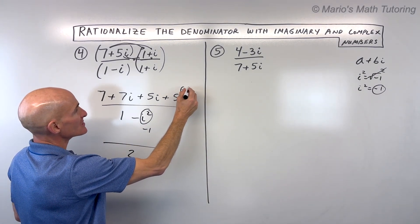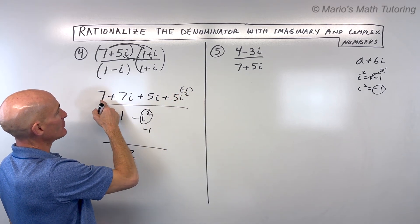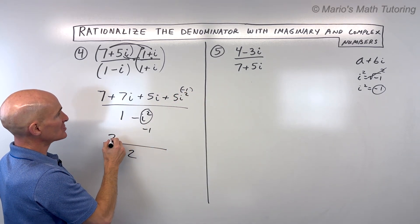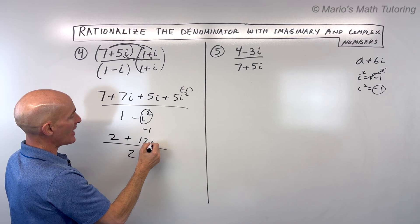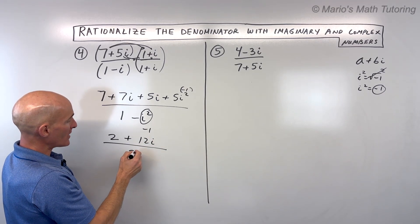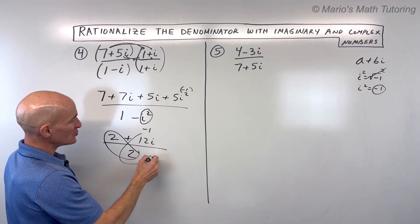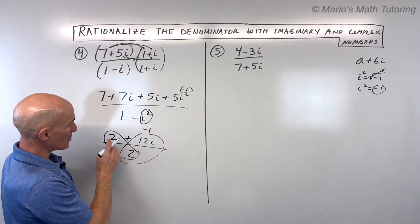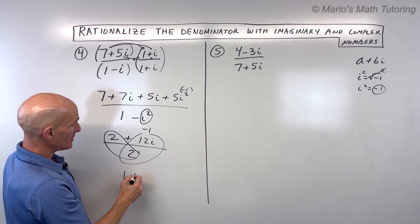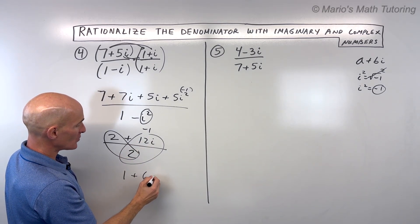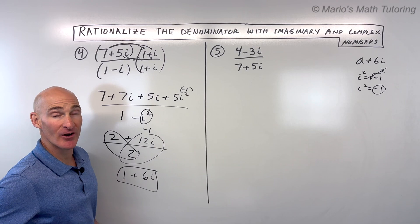i squared is negative one, so five times negative one is negative five, plus seven is two. Seven i plus five i is twelve i. Split into two fractions with denominator two: two divided by two is one, twelve divided by two is six. So the final result is one plus six i.